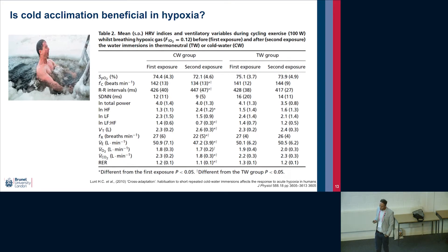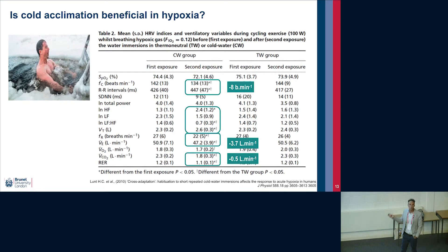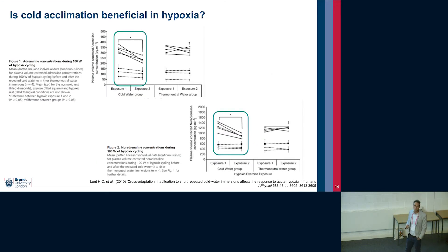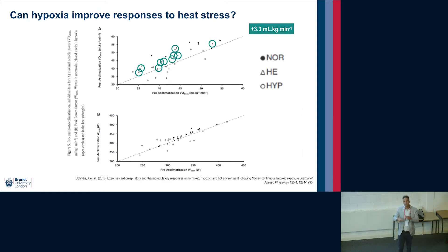The group at Portsmouth — Heather's group — did really nice work showing that just six five-minute exposures to relatively cold water at around 12°C were sufficient to improve a number of cardiovascular and metabolic responses to subsequent hypoxic exposure. Reductions in heart rate during hypoxic exposure, reductions in the ventilatory response and VCO2, among other things. They also examined adrenaline and noradrenaline to provide mechanistic insight, and reductions in those catecholamine responses went hand in hand with the improved adaptation.